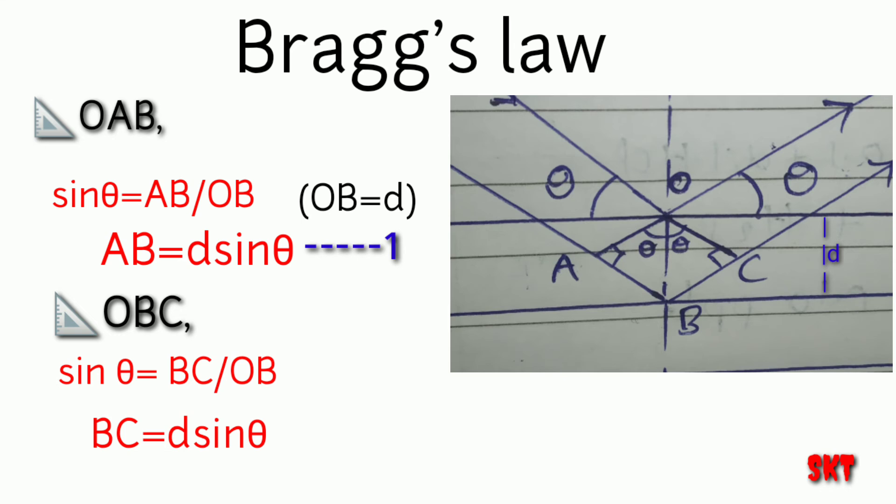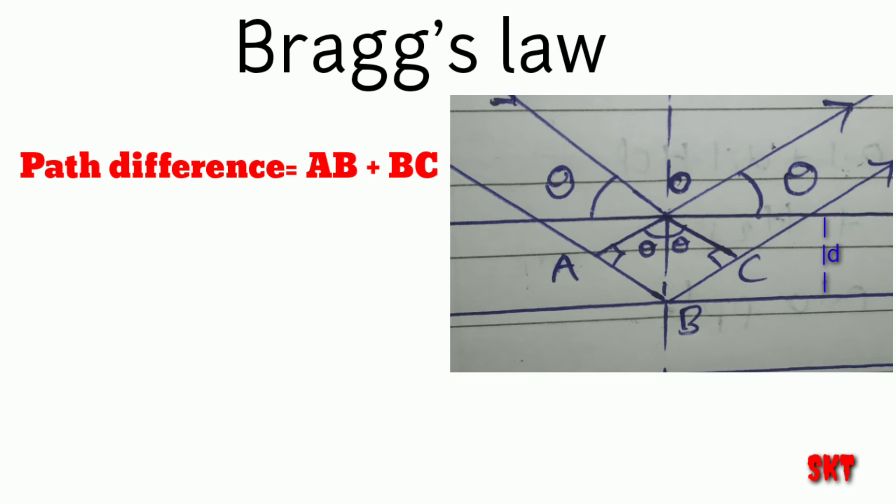Now take this as equation number 2. So by definition we know that the path difference can be written as AB plus BC. So by equation 1 and 2, AB and BC becomes D sin theta. So the path difference becomes 2D sin theta. So according to Bragg's law the path difference is an integral multiple of its wavelength. So let us take the wavelength as lambda and by definition we could write it as 2D sin theta is equal to n lambda. And like this we could derive Bragg's equation very simply within no time.